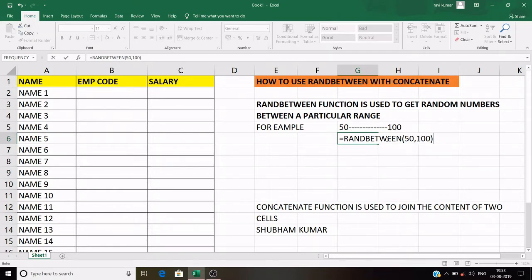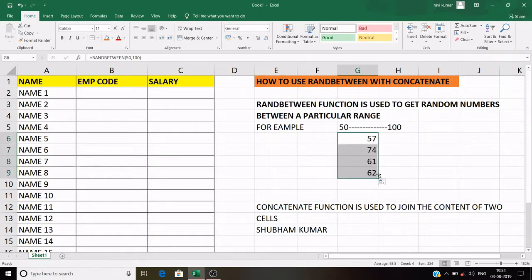And this is our range and I want a particular number, so I press enter and see, 56 comes. So that is the random number between this range. And when you drag this formula, all the numbers will be between this range only. So this is how we use RANDBETWEEN function in action.